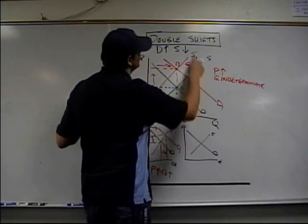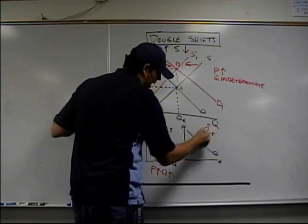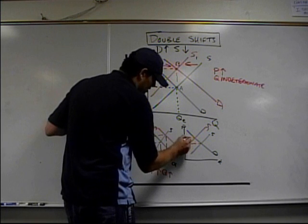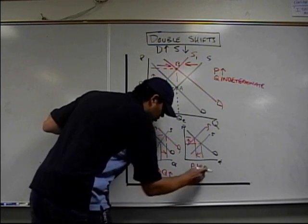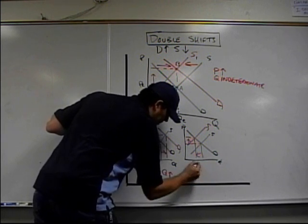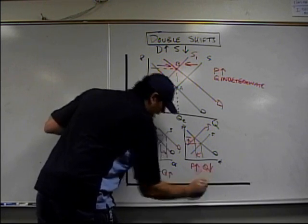But over here, a decrease in supply shifts supply to the left. That means price goes up and it looks like quantity goes down. Price goes up, quantity goes down.